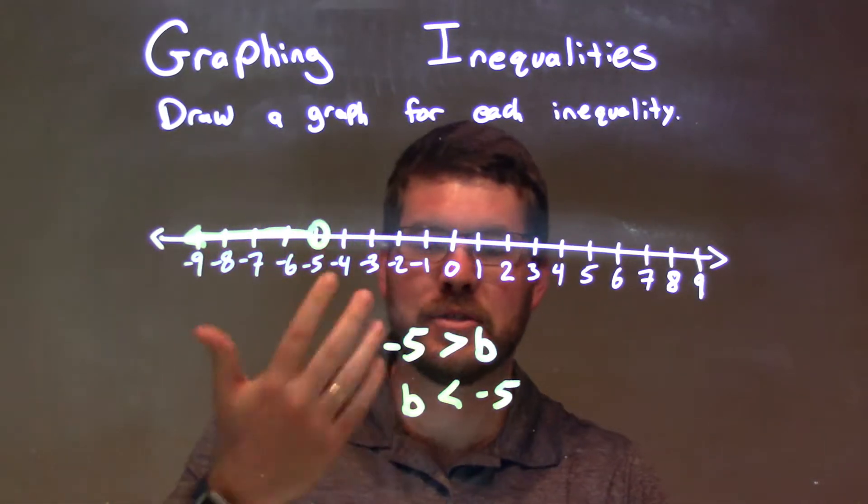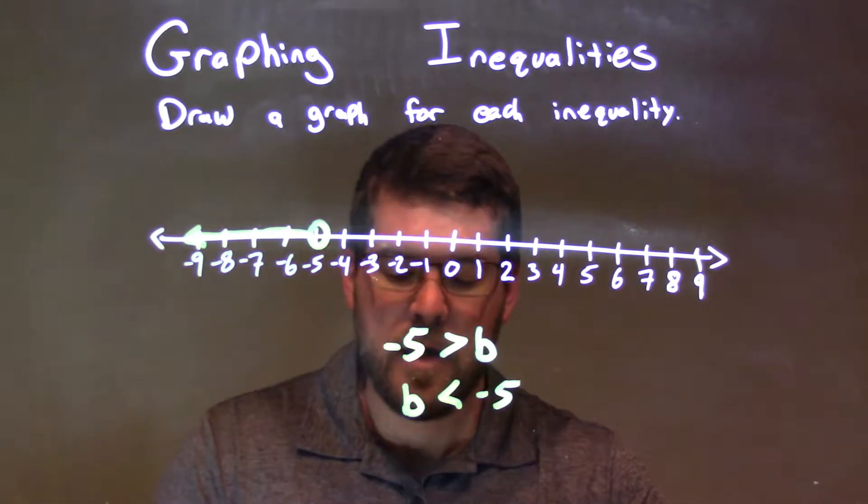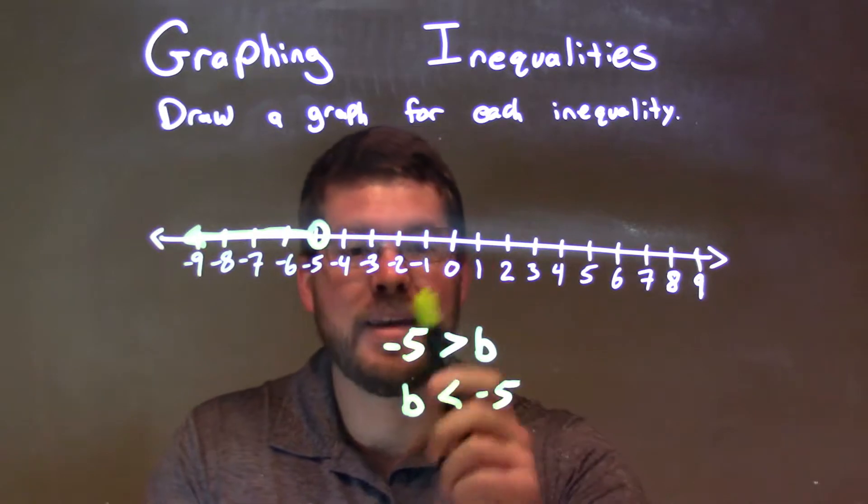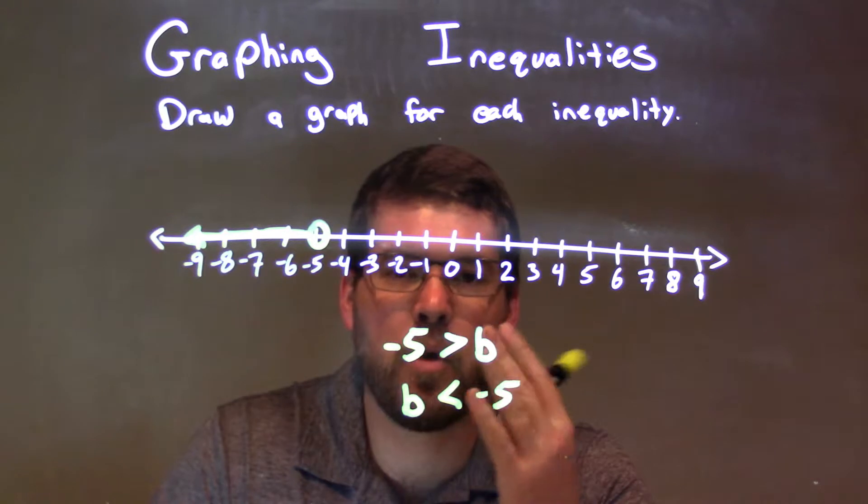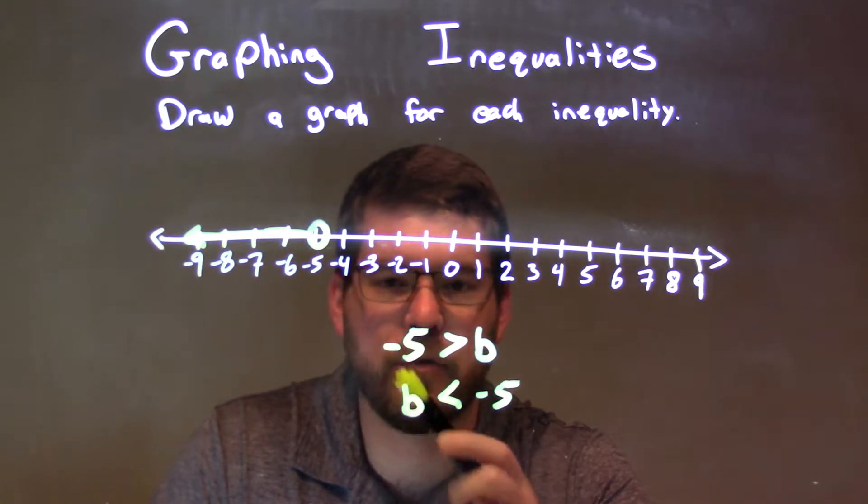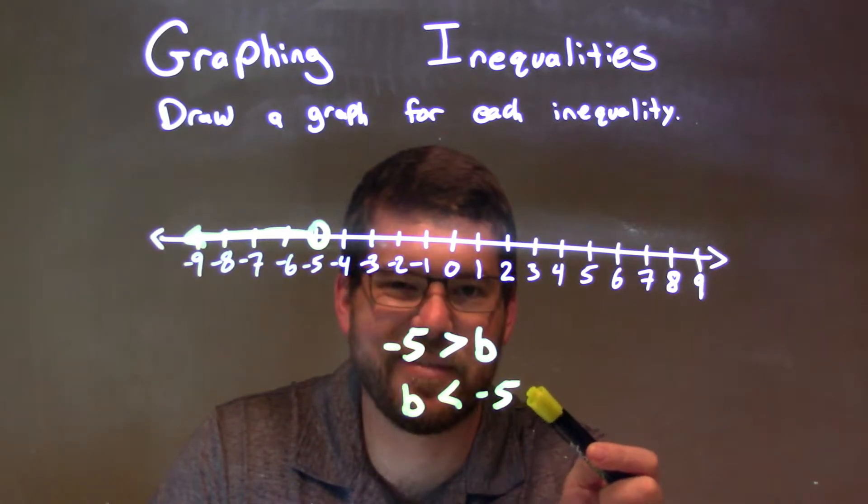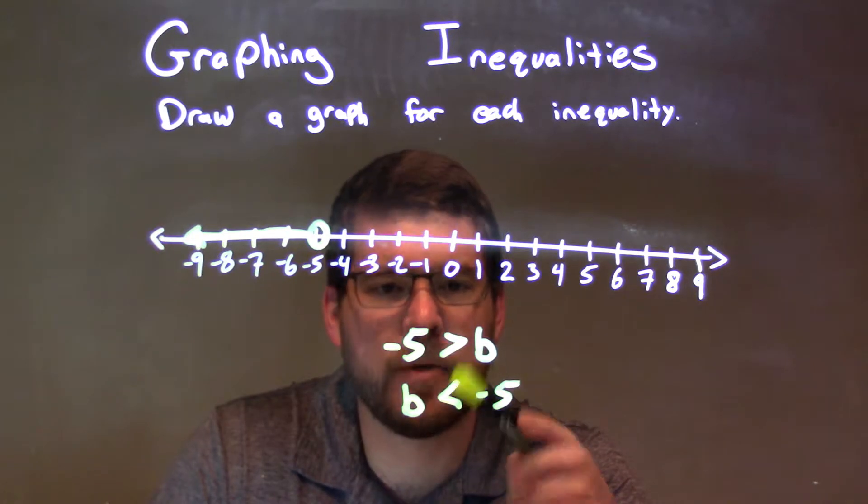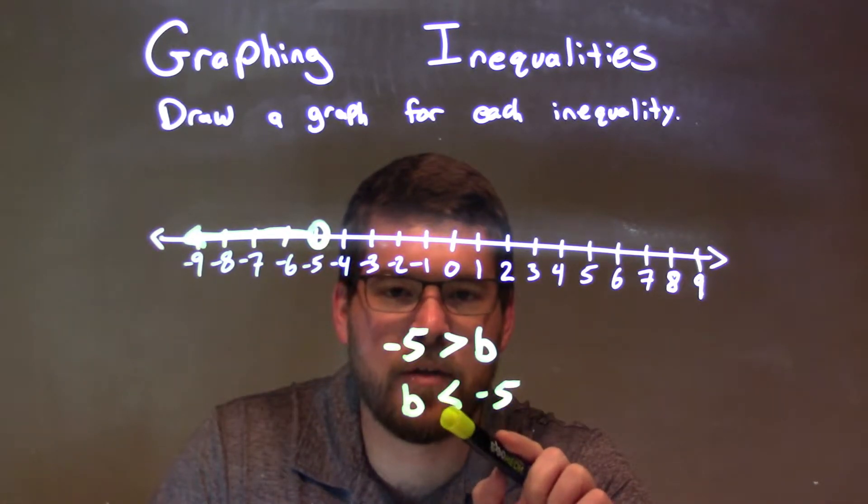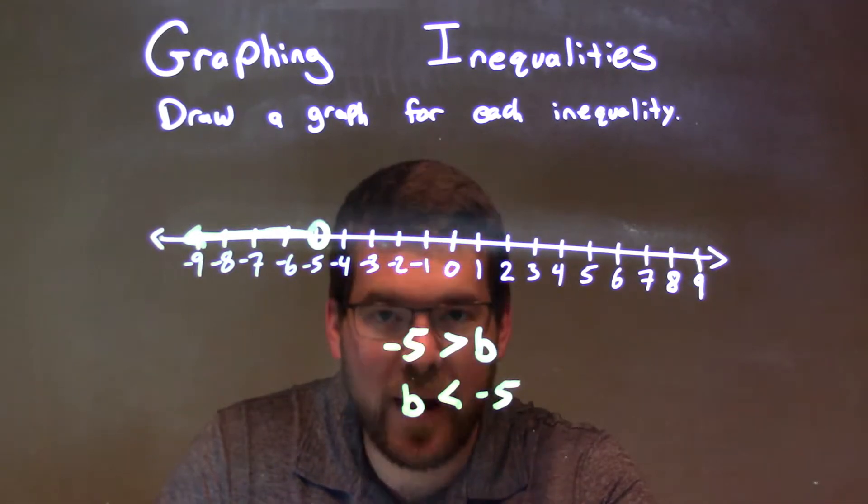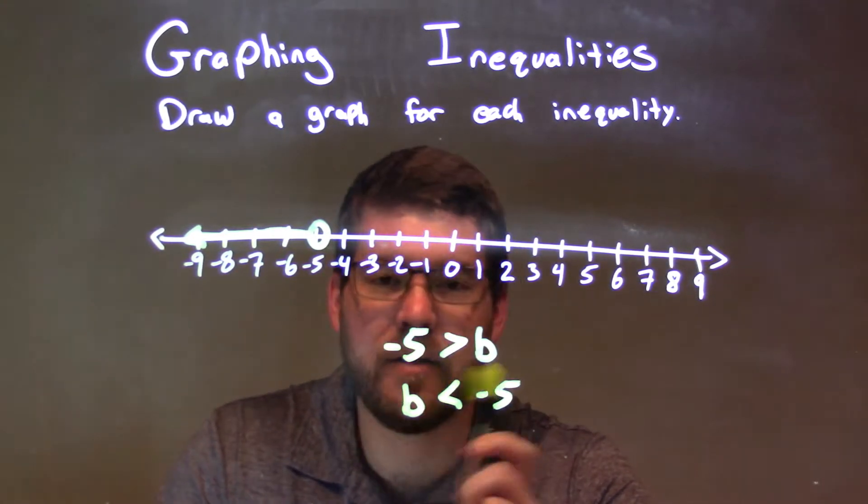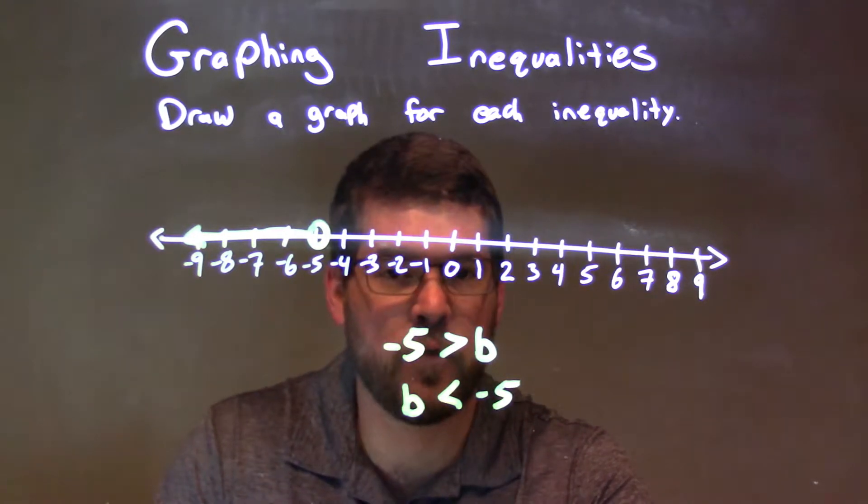Let's review that. We're given negative 5 is greater than b. I want b to come first, so I flip the whole inequality. b comes first, negative 5 comes second, and the inequality in the middle flips from a greater than to a less than sign. Now remember, these two are the same thing, just shown a different way. Saying negative 5 is greater than b is the same thing as saying b is less than negative 5.